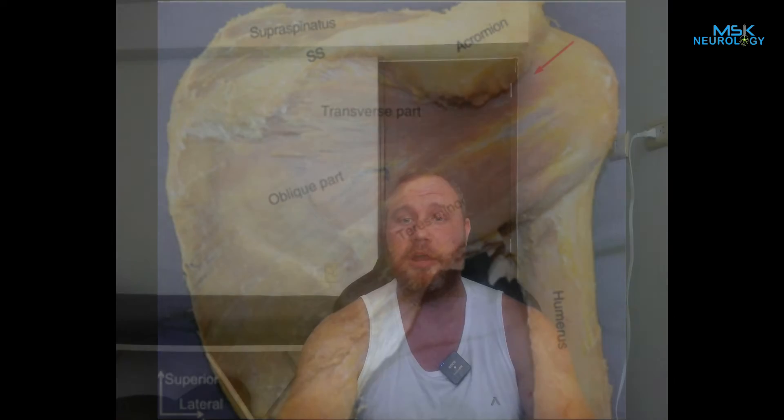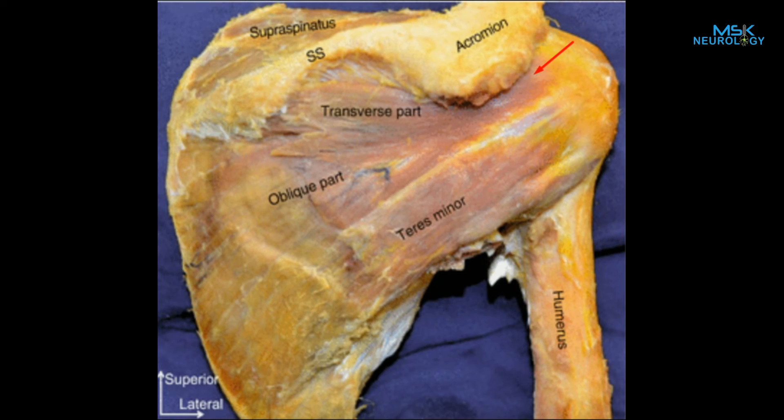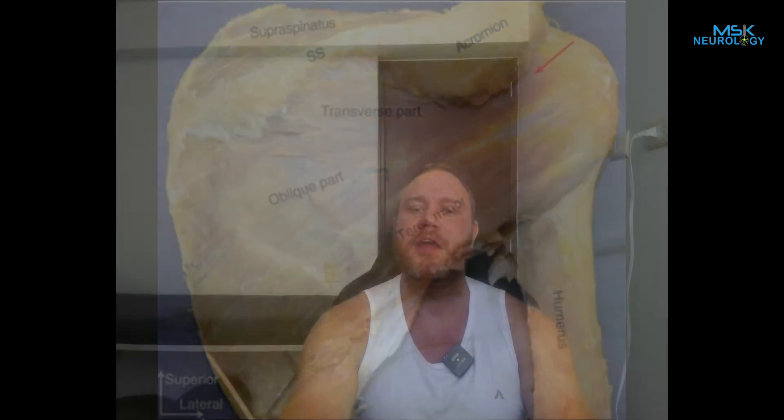The superior portion of the infraspinatus muscle — I'm going to put a good picture of that in the video — attaches very far up on the tubercle, on the superior part of the humeral head. And this is important because it also passes under that subacromial passage, under that acromial roof.